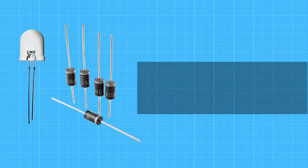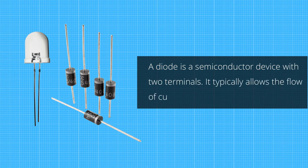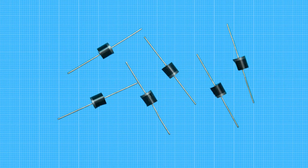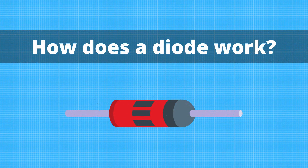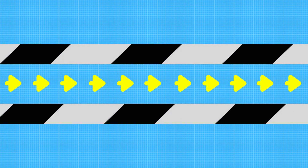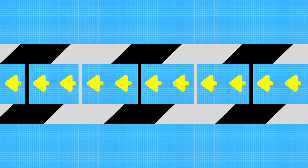A diode is a two-terminal electronic component that conducts current in one direction only. Diodes are usually created using semiconductor components. A diode allows current to flow in one direction and blocks the flow of current in the opposite direction.